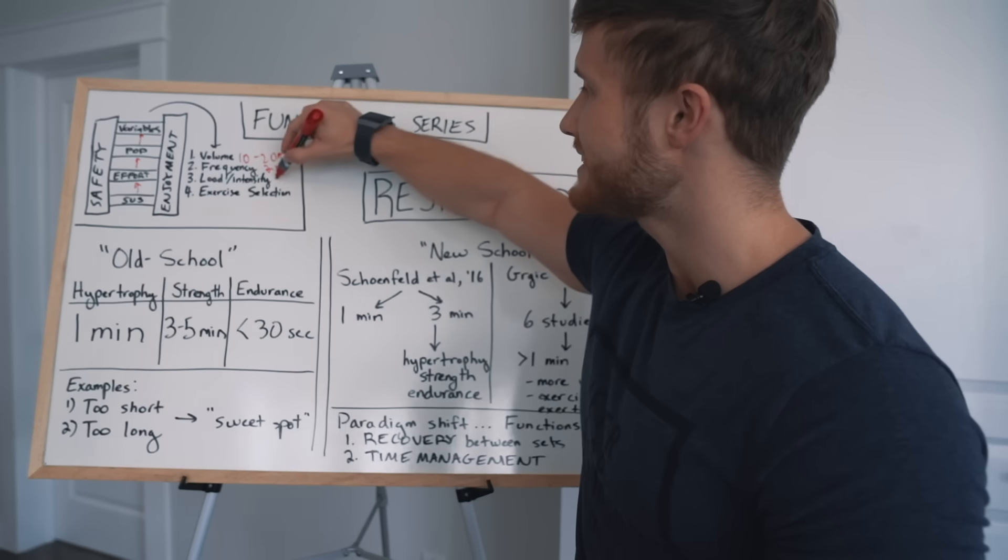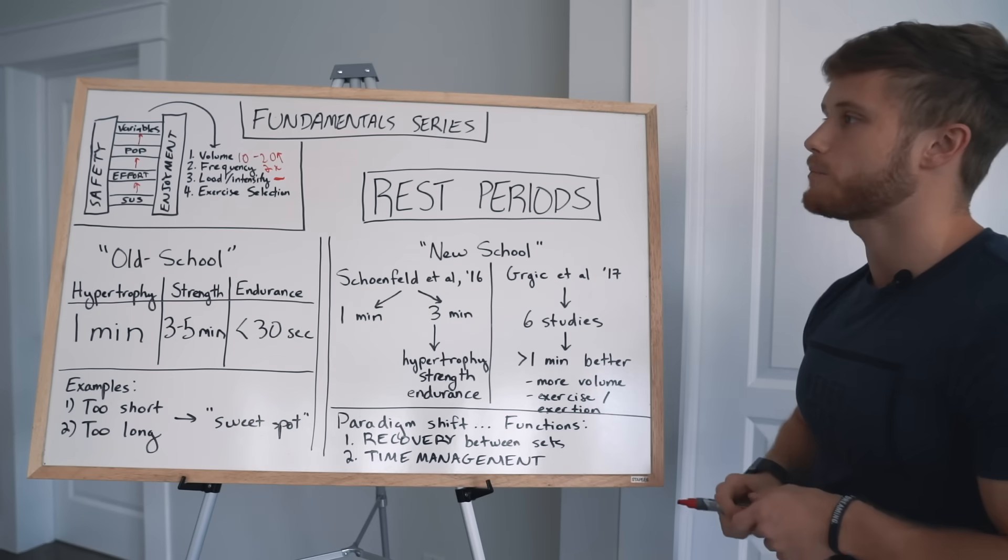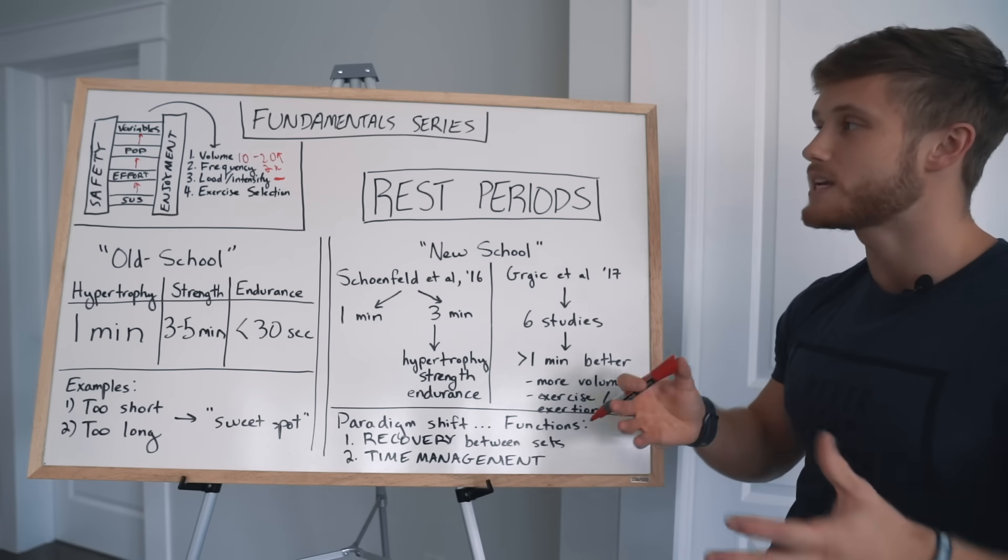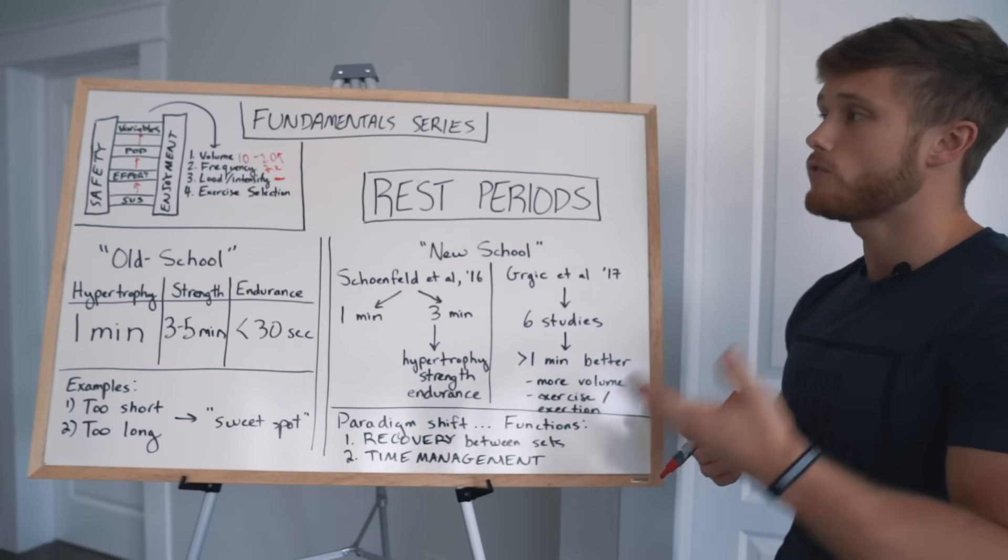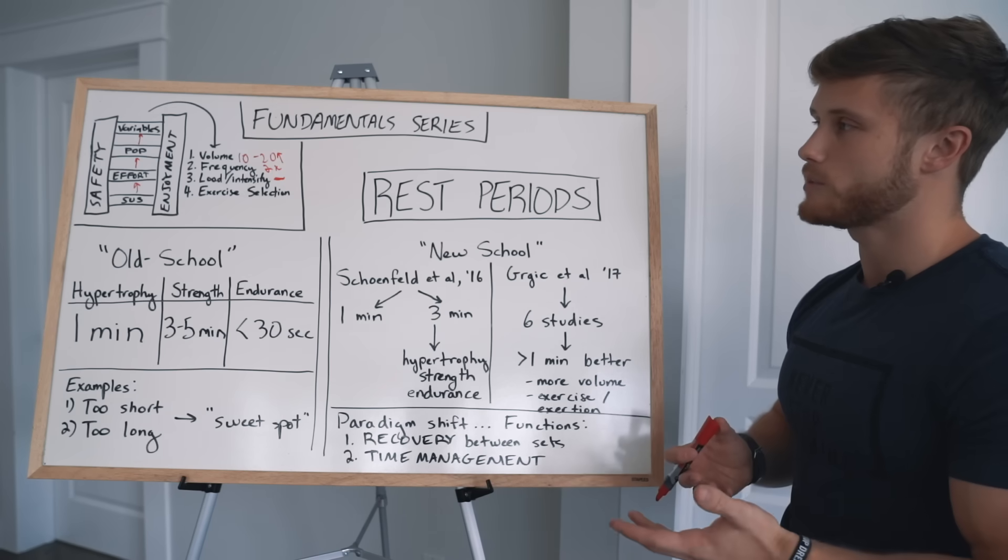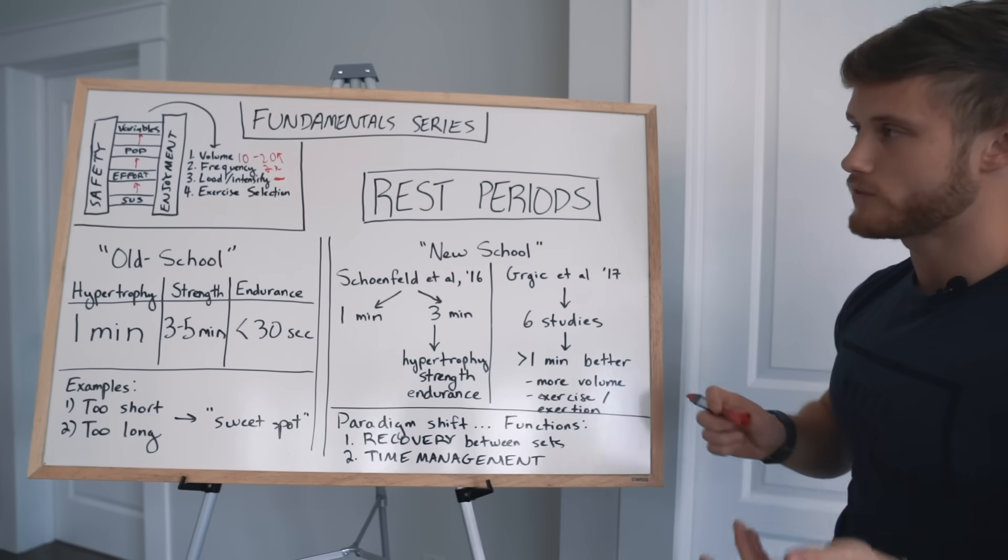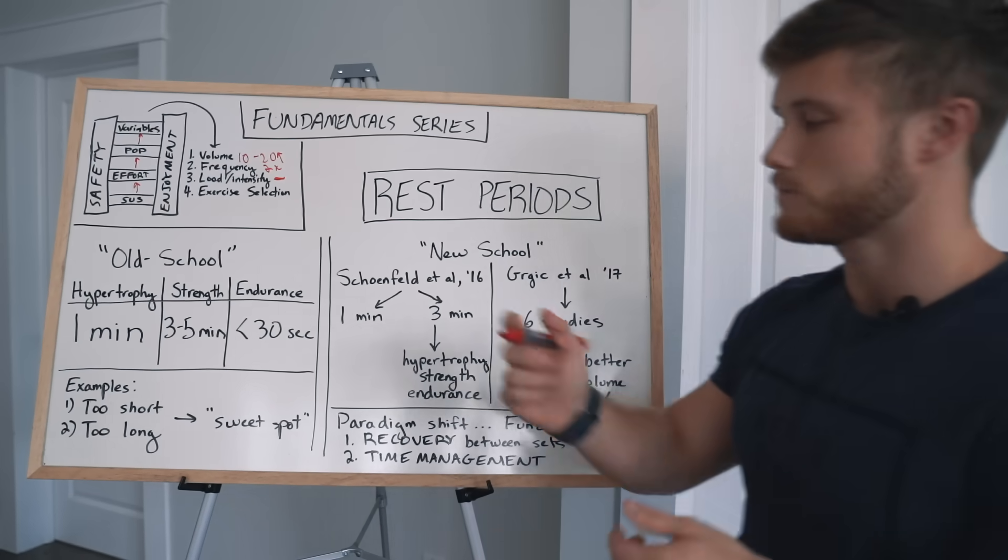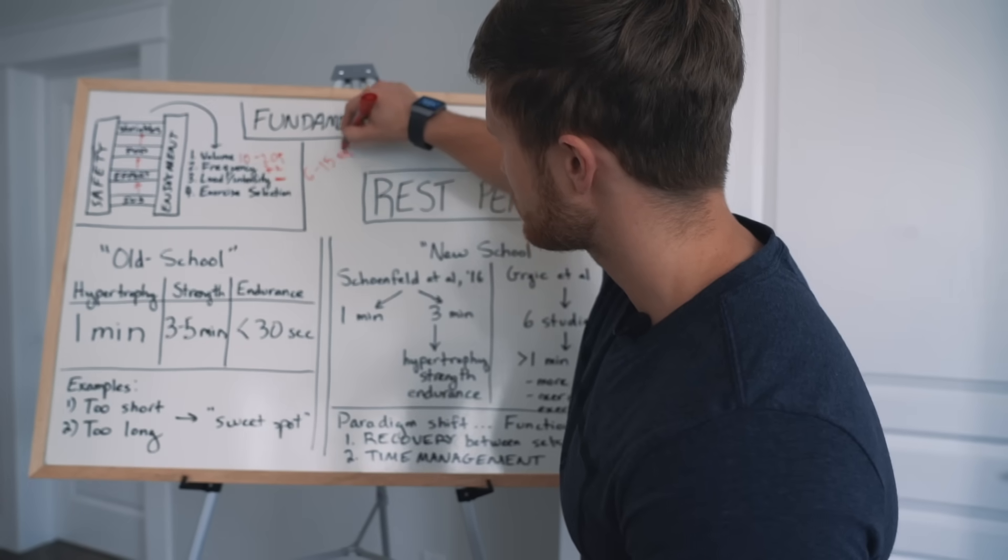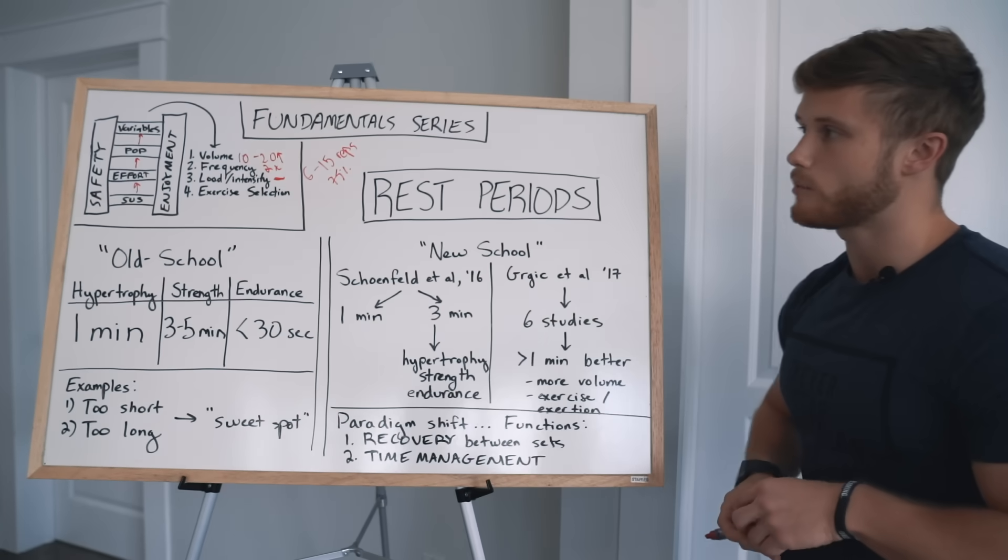Then we also talked about load and intensity in the context of how many reps you should perform. So should you do high reps or low reps? And we said that really a wide range of rep zones have been shown to be effective for hypertrophy, but they tend to have differential effects on recovery. So for practical purposes, we established 6 to 15 reps as the practical hypertrophy zone where you want to be doing most of your work.